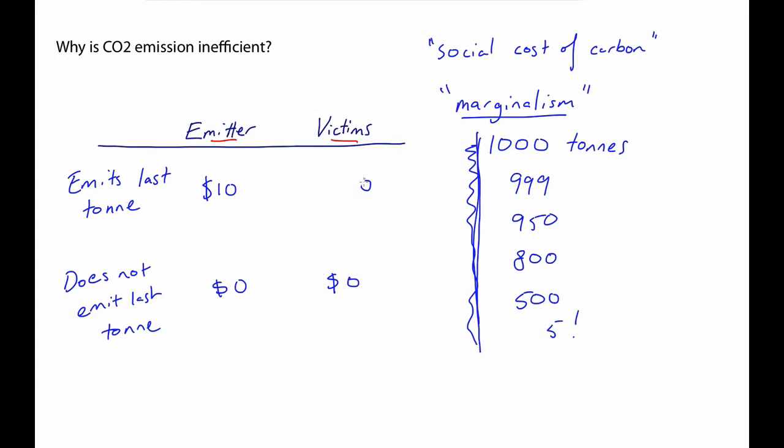But note, it's just the relative values that the economist is about. It's the difference between the two. So you could just as well represent it as, it's worth nothing to the victims. You're emitting that last tonne. But it is worth something to them. If you don't, it's worth positive $60. These two representations are equivalent. And because it's easier to work with positive figures, that's the way I'm going to represent it for our purposes.